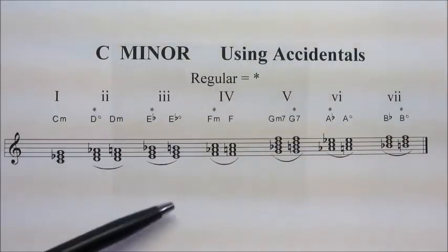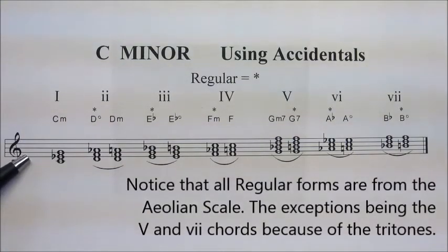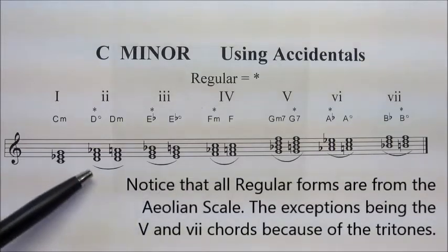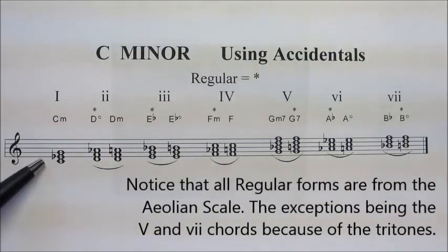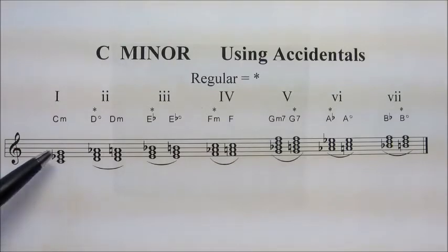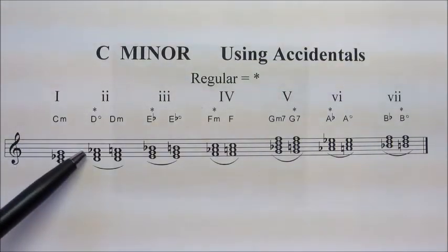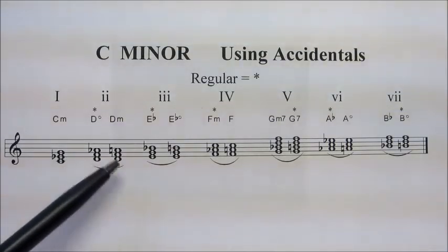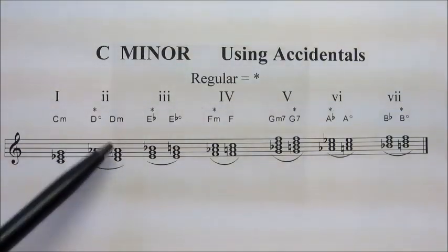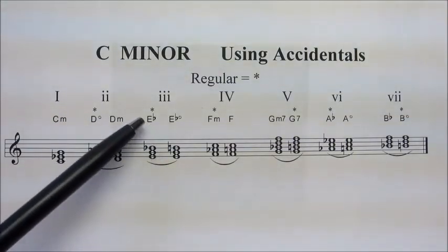Here is C minor again — same chords, except I don't have a key signature. Therefore, I'm creating these chords by using accidentals. So my one chord, C minor, not surprisingly, has an E-flat on the third to make it minor. My regular two chord — diminished. The A-flat makes that diminished. When I naturalize it, the irregular form becomes D minor.